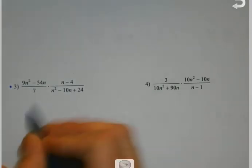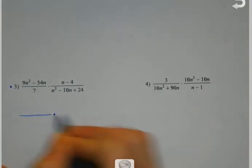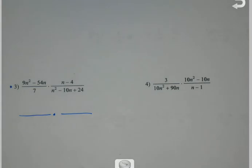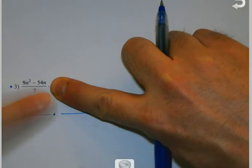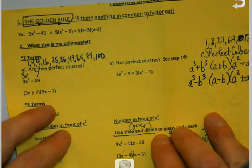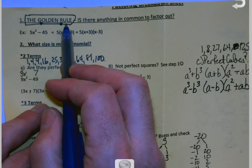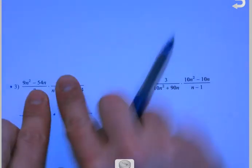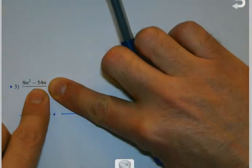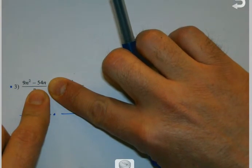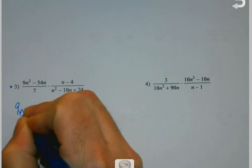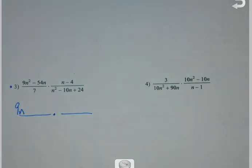We're going to go fraction to fraction, working our way through these. As always, the golden rule rules: do these terms have anything in common that I can factor out — the bigger the better? 9n. Because when I'm factoring, I can take the largest number but the smallest exponent that they have in common.